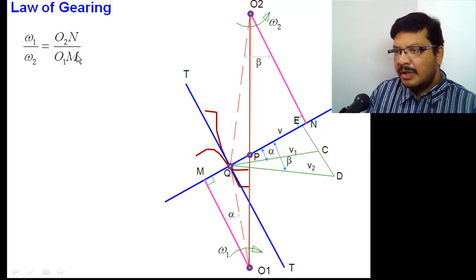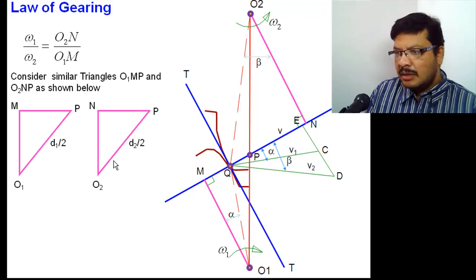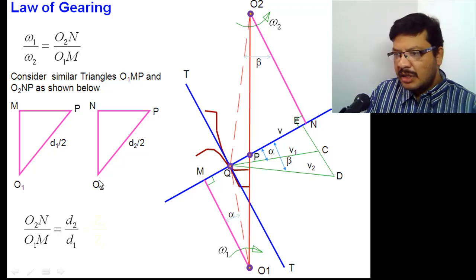Omega 1 by omega 2 equal to O2N by O1M. To get this value, consider the similar triangles O1MP and O2NP. From these similar triangles, if you take the ratio of O2N by O1M, that is equal to D2 by D1. Here, O2P that is nothing but D2 by 2 divided by O1P that is equal to D1 by 2. 2s gets cancelled and you will get D2 by D1.